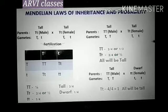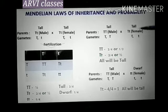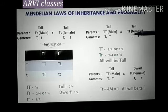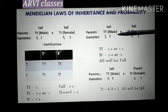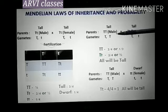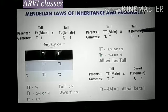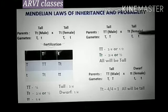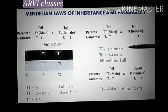Similarly, if we see the crossing between two parents where one is homozygous dominant (capital T) and the other is heterozygous tall, and if we see the progeny, all will be tall. The probability of getting homozygous tall is 1 by 2.